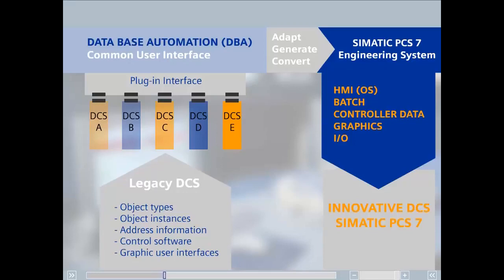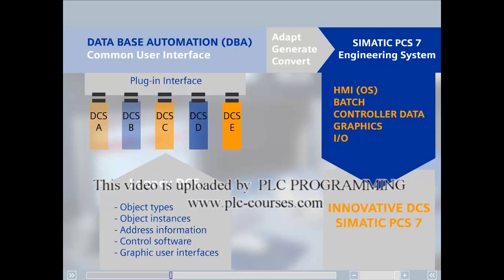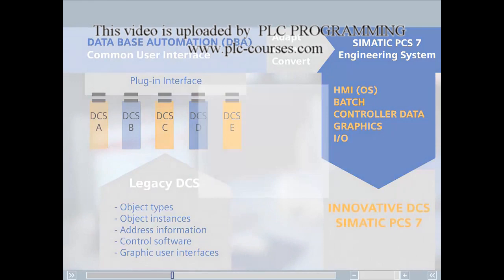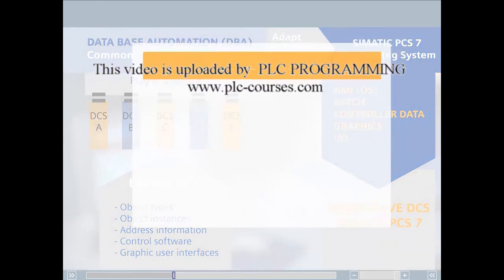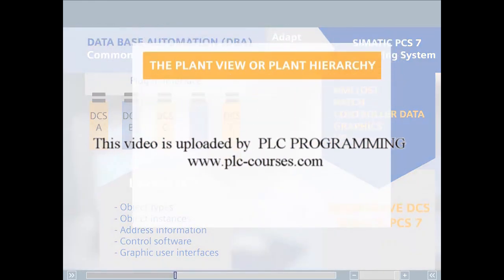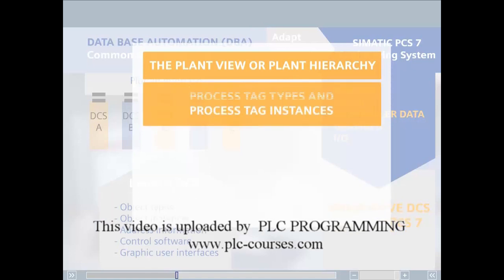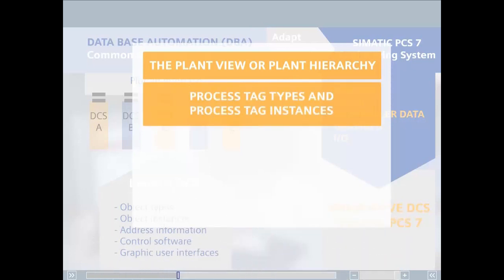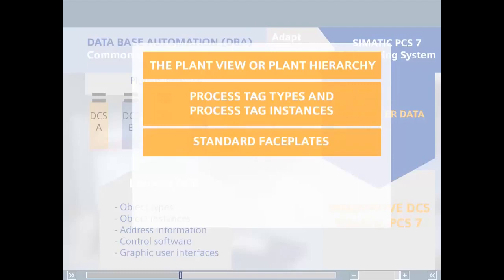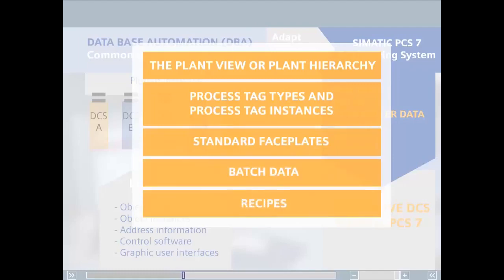This has been proven in many migrations from our own as well as from various systems from other vendors. DBA transfers the process data of the old system to PCS7. This includes the plant view or plant hierarchy, process tag types and process tag instances, standard faceplates, batch data, recipes, etc.